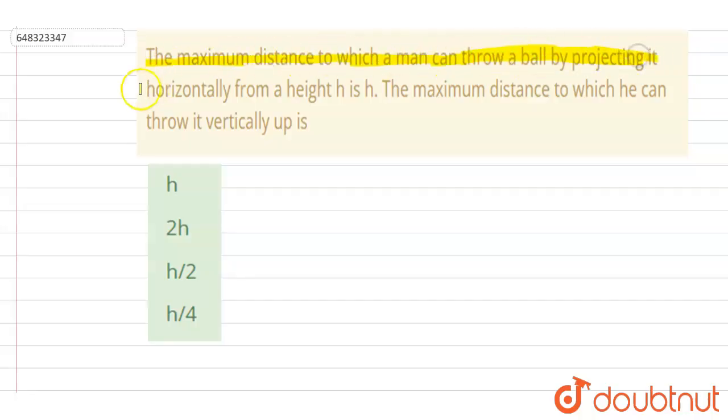The maximum distance to which a man can throw a ball by projecting it horizontally from a height h is h. The maximum distance to which he can throw it vertically up is... So if you see, let's say this is the building from which it is thrown, right?